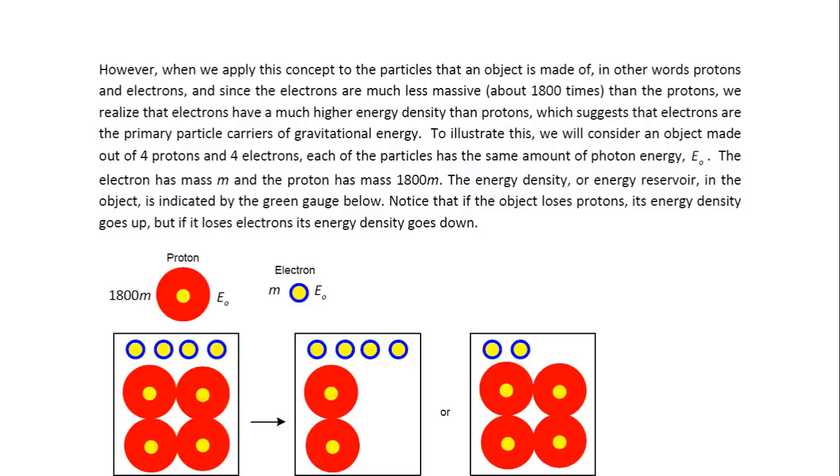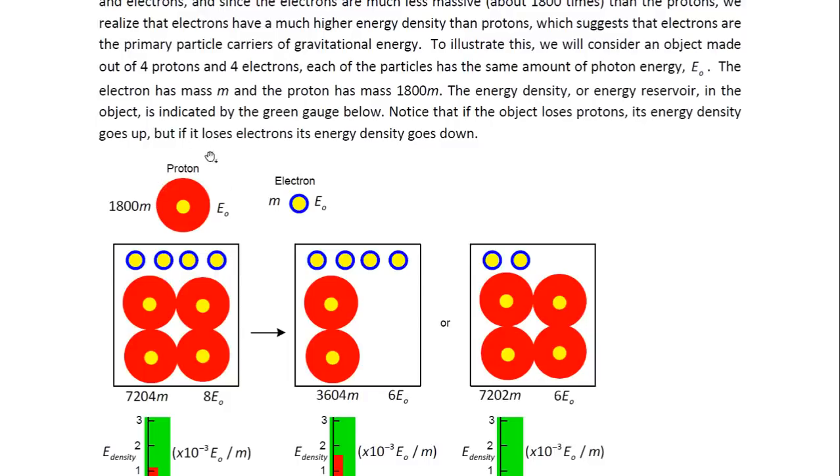and since the electrons are much less massive, about 1,800 times less massive than the protons, we realize that electrons have a much higher energy density than protons, which suggests that electrons are the primary particle carriers of gravitational energy. To illustrate this, we will consider an object made out of four protons and four electrons. Each of the particles has the same amount of energy. So, this is what's illustrated here. Protons and electrons have the same amount of energy, but the proton is much more massive than the electron.